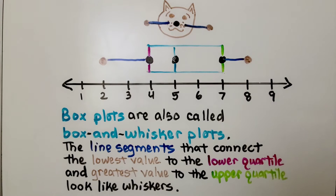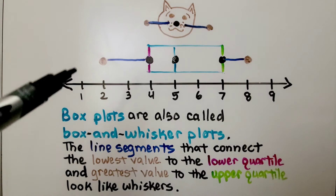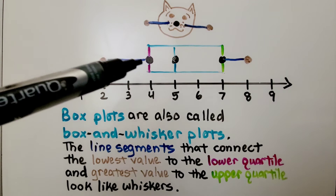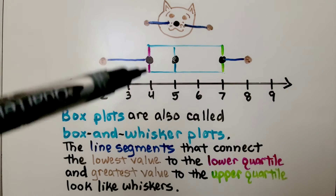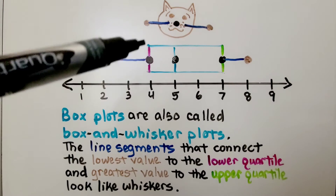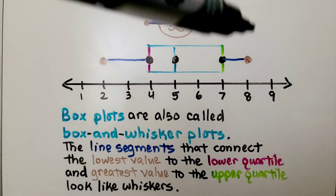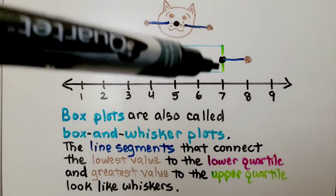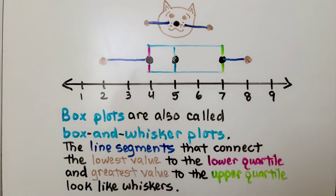Box plots are also called box and whisker plots. The line segment that connects the lowest value to the lower quartile, and the greatest value to the upper quartile, they look like whiskers.